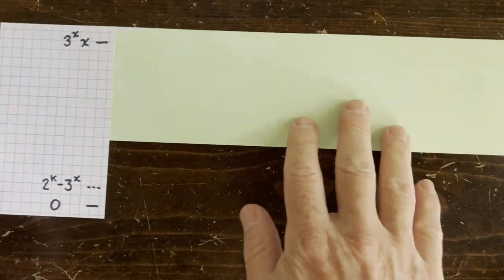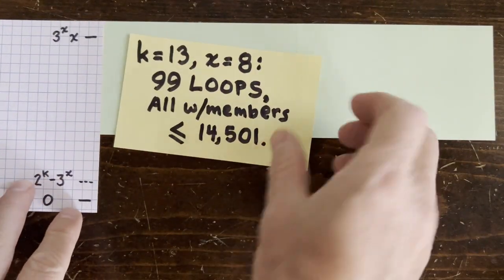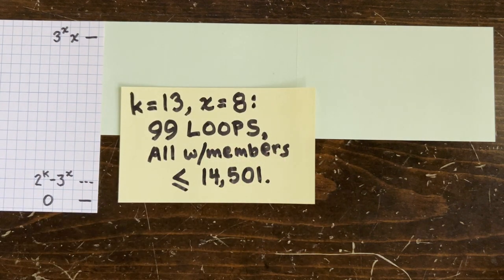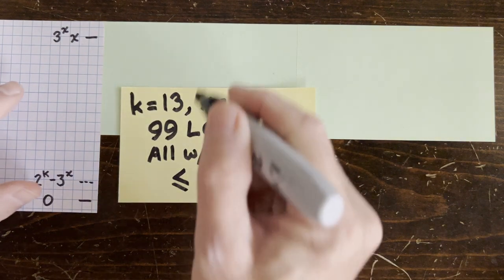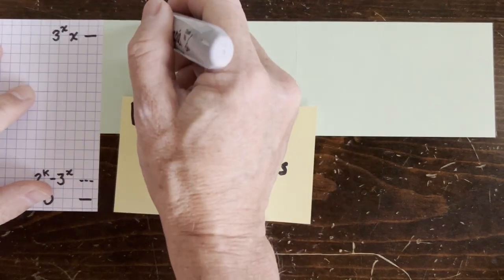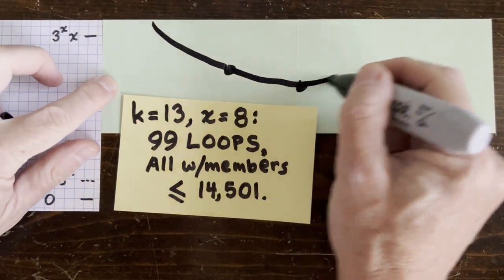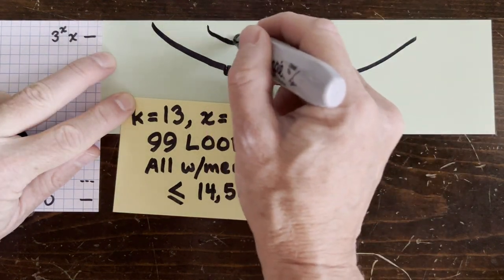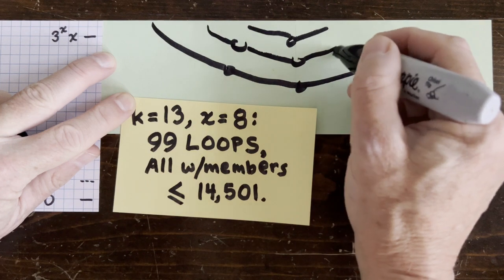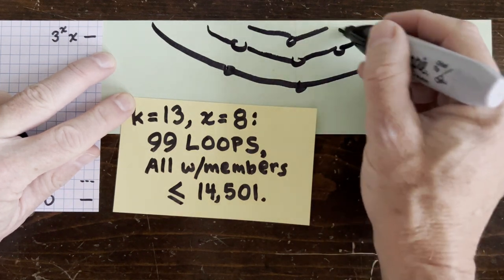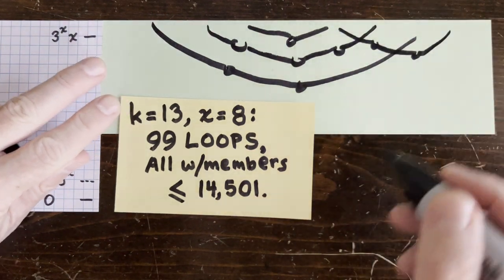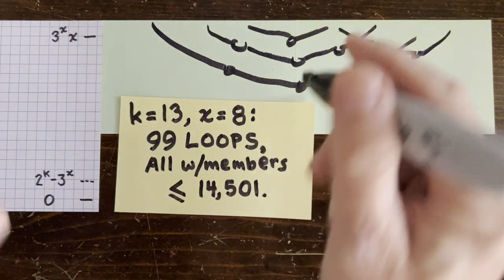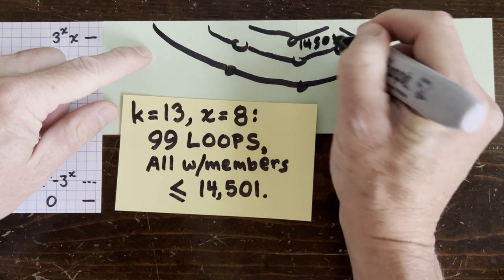Let's look at a larger k and x now. So when k equals 13 and x equals 8, there are 99 distinct loops. The outer loop comes swooping down here, and the inner loop comes to here, and the other loops are in between. So how many of these 99 loops might be integer loops? Well, the inner loop's lowest member is 14,501, and every other loop has some member smaller than that.